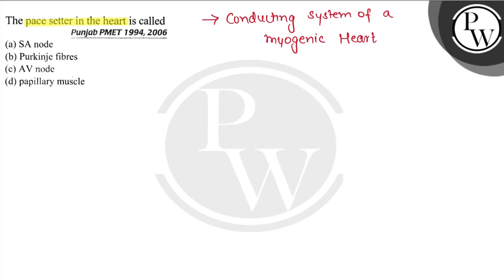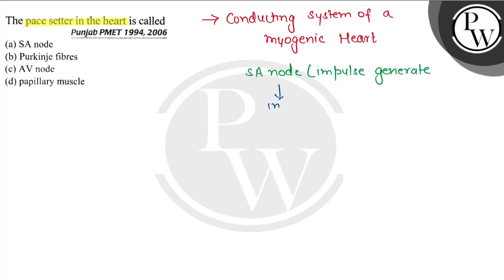What happens here? The first thing is, our SA node or Sino-atrial node — this generates the impulse. This impulse travels via the inter-nodal pathway.